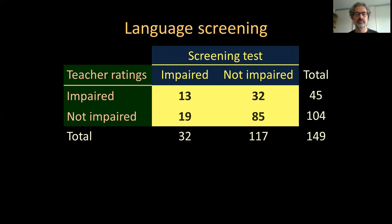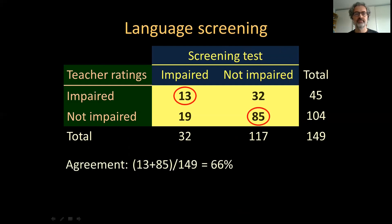For example, there were 13 children who were rated as impaired on the basis of both the clinical and the teacher scale, and 85 children who were classified as non-impaired according to both instruments, out of a total of 149 children. The sum of the agreements divided by the grand total indicated an agreement of 66% over the two instruments.